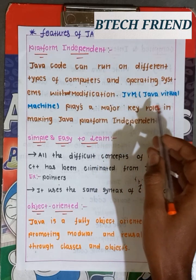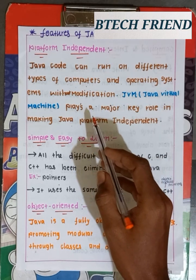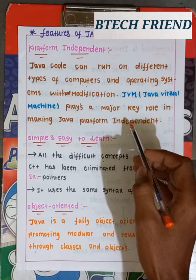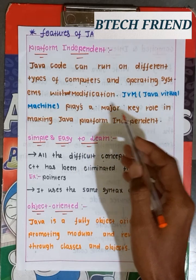JVM, the Java Virtual Machine, plays a major key role in making Java a platform independent language.